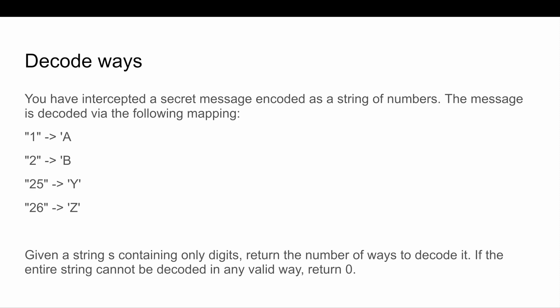The first question which was asked in the coding round is decode ways. The question says that you have intercepted a secret message encoded as a string of numbers, and the message is decoded by following a mapping which is given in my slide. So 1 is mapped to A, 2 is mapped to B, and so on, so 26 is mapped to Z.